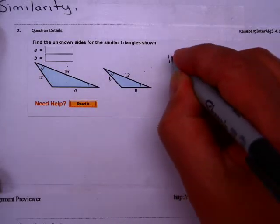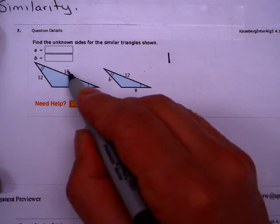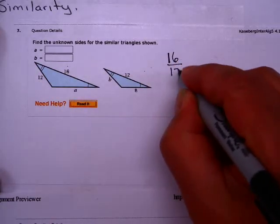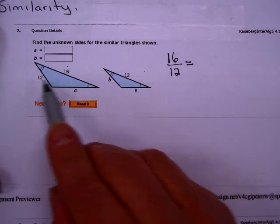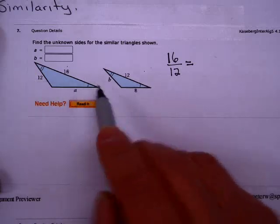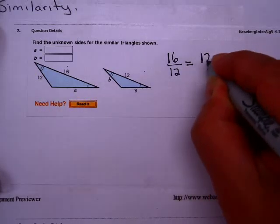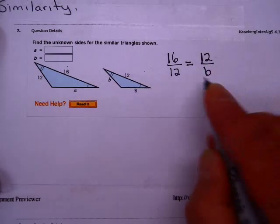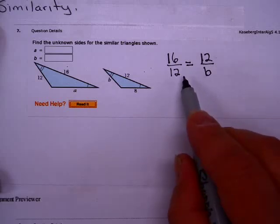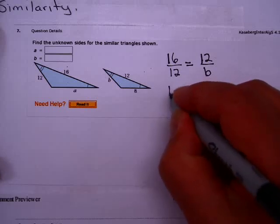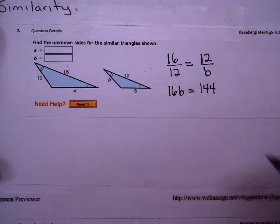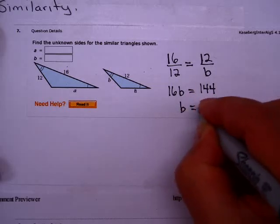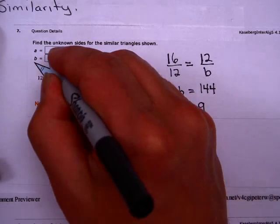If you take the ratio of the corresponding sides that you know, 16 over 12, for example, and you set that equal to the same ratio of sides that you don't know, 12 over B, for example, this gives you a proportion that you can use to solve this problem. I'm going to cross-multiply. I get 16B equals 12 times 12, which is 144. That gives you B equals 9. So B is 9.